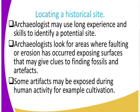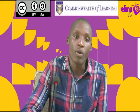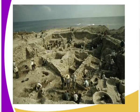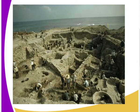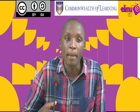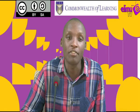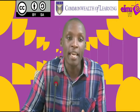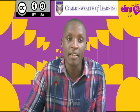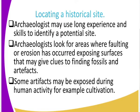Archaeologists also look for areas where faulting or erosion has occurred, exposing surfaces that may give clues to finding fossils and artifacts. Where erosion has taken place, material remains in the soil are brought to the surface, helping identify the site. Another method is that some artifacts may be exposed during human activity such as cultivation, when buried material remains are uncovered.